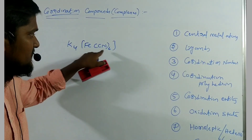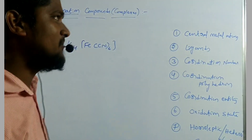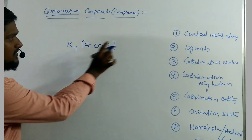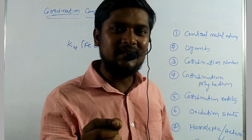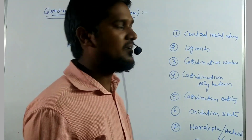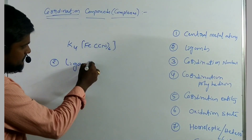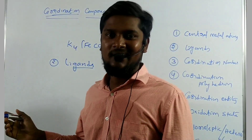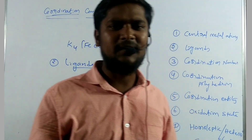The central metal atom is the element which is coordinated by more number of ligands. The second term is ligands, which are classified into several types like monodentate and polydentate — to be discussed in the next lecture.